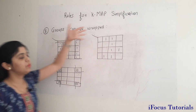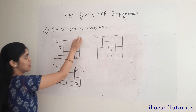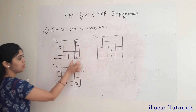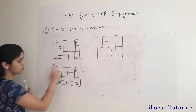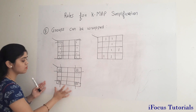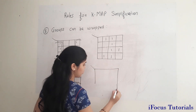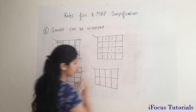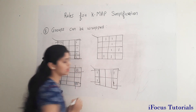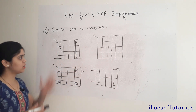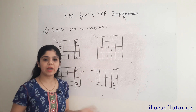The last rule is that groups can be wrapped. The leftmost column can be grouped with the rightmost column, forming an octet rather than two separate quads. Similarly, all four corners of a KMAP can be grouped together to form a quad. In a 3-variable KMAP, the leftmost and rightmost cells in a row can be wrapped together to form a quad.